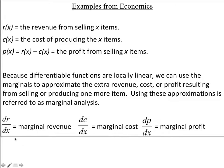Just a few definitions. We're going to call R of x the revenue from selling a product — the money that comes in. We're going to call C of x the cost of producing an item — the money that's going out. If we subtract the two, revenue minus cost, then that's the profit — that's what we get to keep.